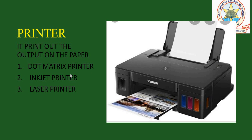The dot matrix printer works like a typewriter. The inkjet printer sprays droplets of ink on paper to form text and graphics.